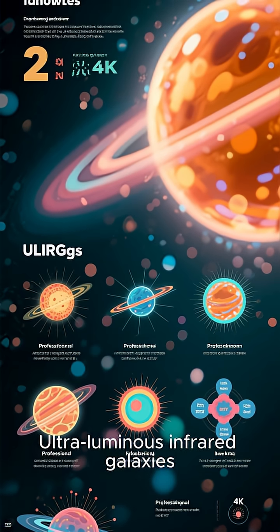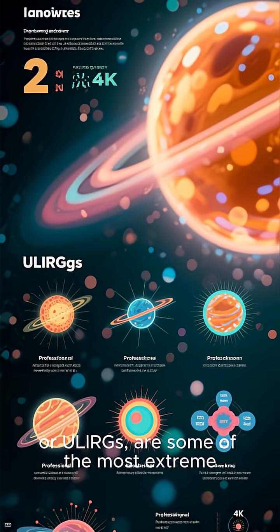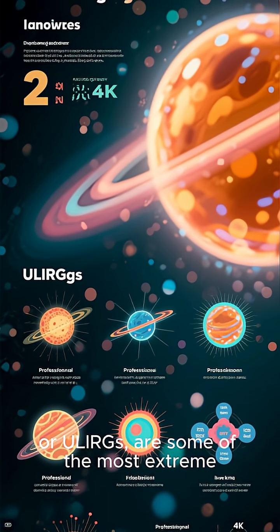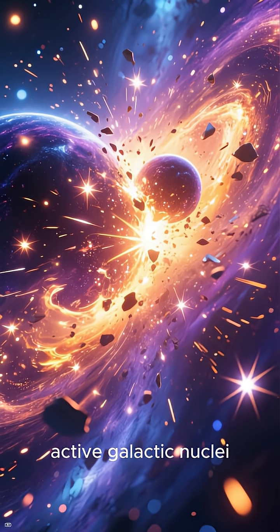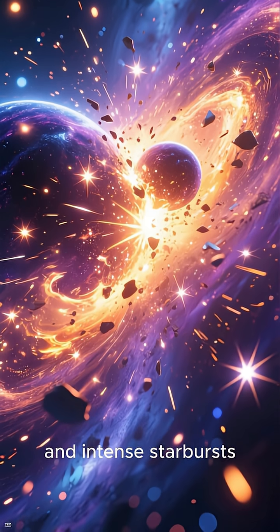Ultra-luminous infrared galaxies, or ULIRGs, are some of the most extreme objects in the universe. They're usually powered by galaxy mergers, active galactic nuclei, and intense starbursts.